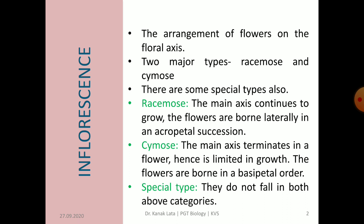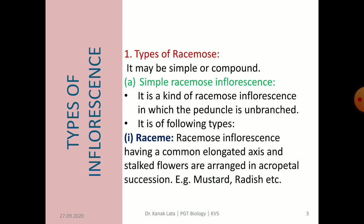Now we will discuss in detail about the different types of inflorescence. First, types of racemose inflorescence — racemose inflorescence may be simple or compound. Simple racemose inflorescence is a type in which the peduncle is unbranched. The first type is raceme, in which there is a common elongated axis and flowers are stalked, arranged in acropetal succession. For example, it is seen in mustard and radish.